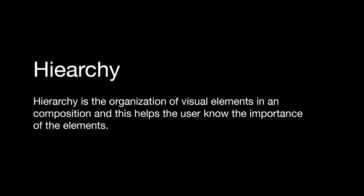The next term is hierarchy. This is the organization of visual elements in a composition, and it helps the user know the importance of the elements. If every element is the same size it's going to be hard to know where to look first. Hierarchy means deciding what has the most importance and making those elements larger, bolder, or using a color that stands out more — so when someone looks at your design, they know exactly what the most important element is and can follow through the design knowing what to look at next.